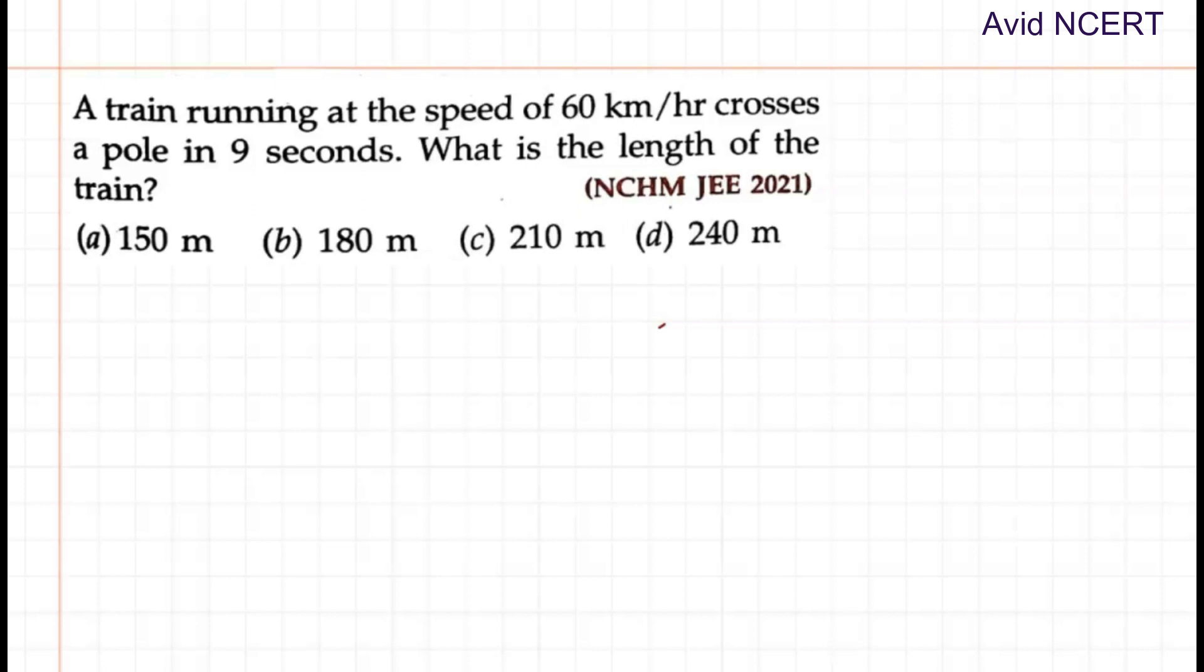So the data we have here is the train running at the speed of 60 km per hour crosses a pole in 9 seconds. The time taken by the train to cross a pole is 9 seconds. What is the length of the train? Length in the sense distance is the question mark.